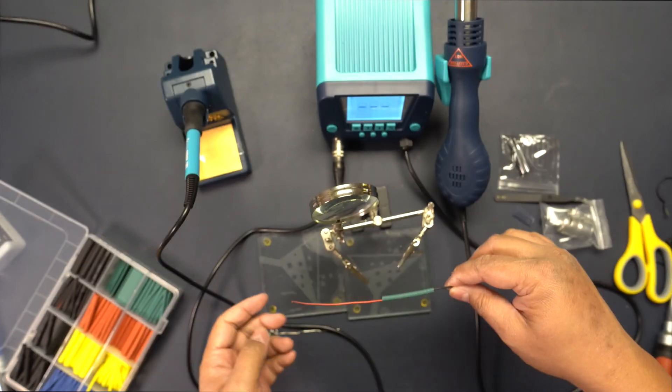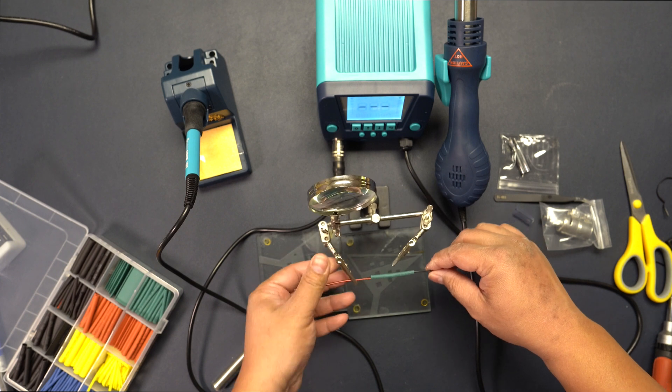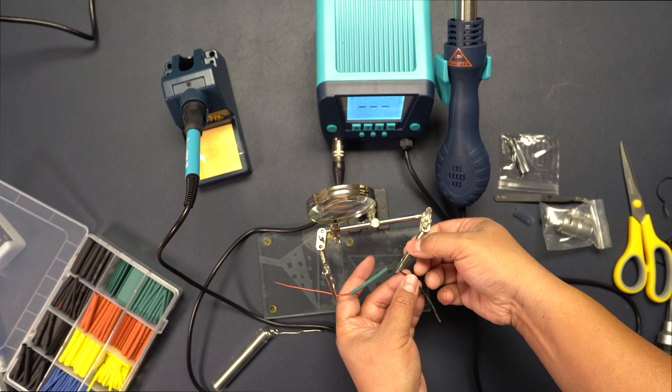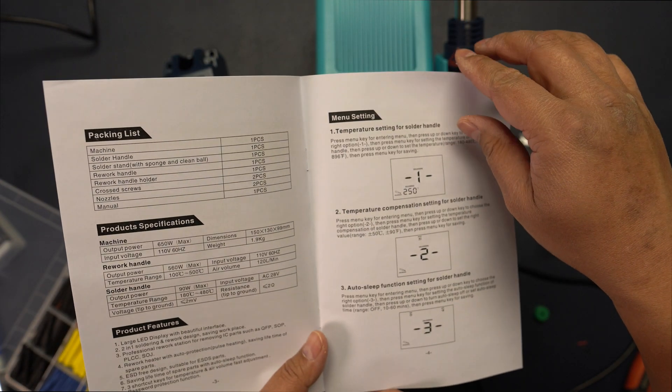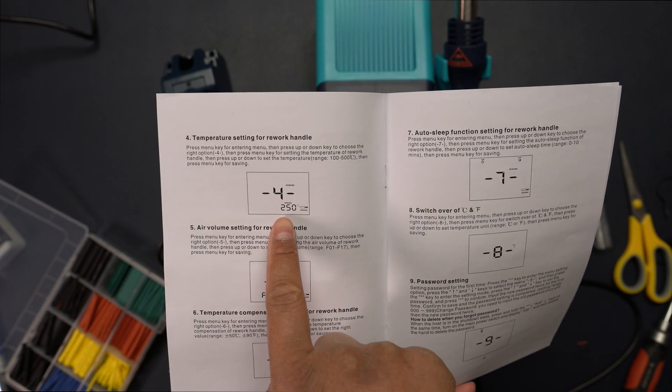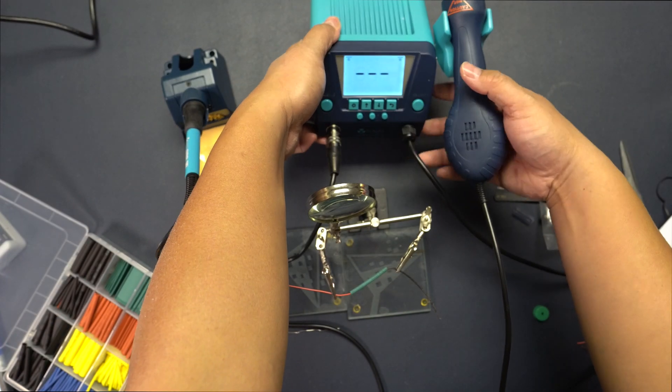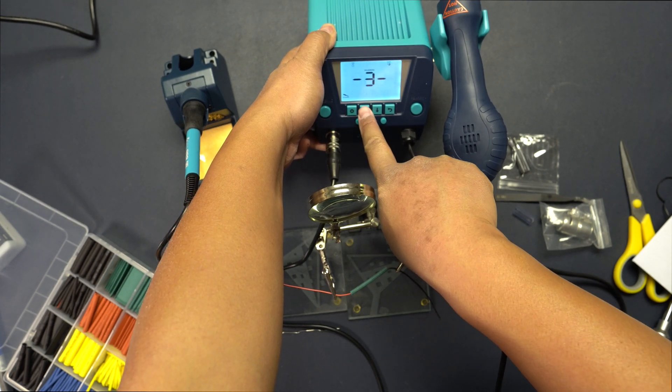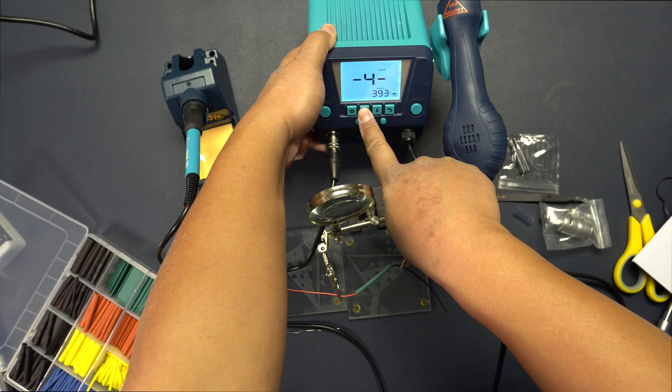Now I'm gonna turn on the heat gun and try to melt it. I'm gonna try to melt it from the middle out. So the heat gun, according to this, temperature setting for rework handle is number four. And I think we should be in the 400 range. Number one four is 392 by default. Let me just get to like 400.